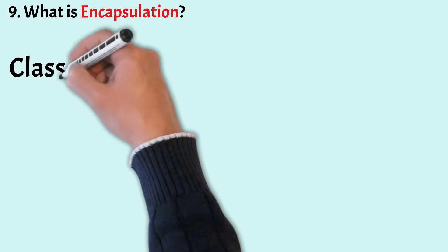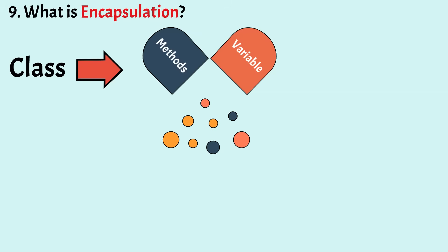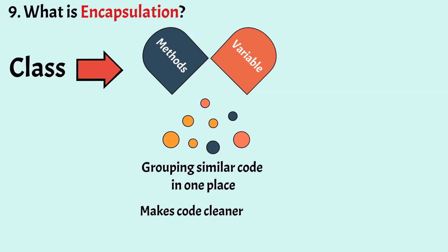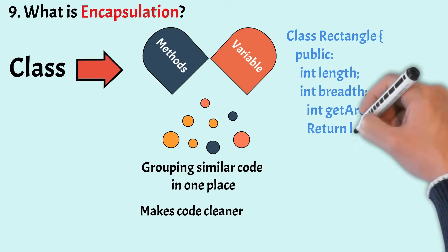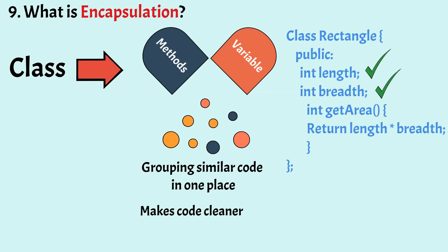Now let us understand what is encapsulation. Encapsulation is one of the key features of object oriented programming. It is a process of grouping similar code in one place — that is, related data members and functions are grouped together in a single class. Encapsulation makes our code cleaner, easy to read, and provides better controls for the modification of our data items. For example, to calculate the area of a rectangle, we need three things: the length, the breadth, and a function to calculate the area. All these related members are grouped together into a single class where you can conceptualize better and read easily.